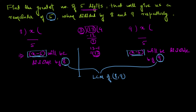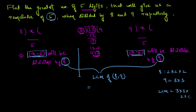So first of all let us find the LCM of eight and nine. Eight is two times two times two; nine is three times three. Their LCM will be three times three times two times two times two — that is 72. So x minus five should be divisible by 72.